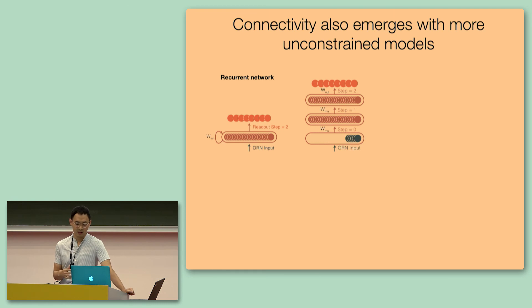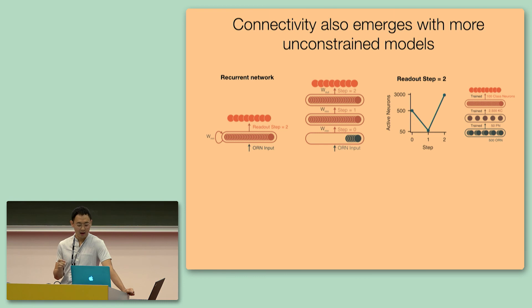Now when we do this and look at the activity of this neural network, we observe that at step one, the network doesn't actually choose to use all 3,000 of these neurons, rather it only learns to use 50 of them. And moreover, the connectivity between step zero and step one corresponds to the glomerular solution that we have previously observed in the feed-forward network, even if we don't constrain for the number of neurons.